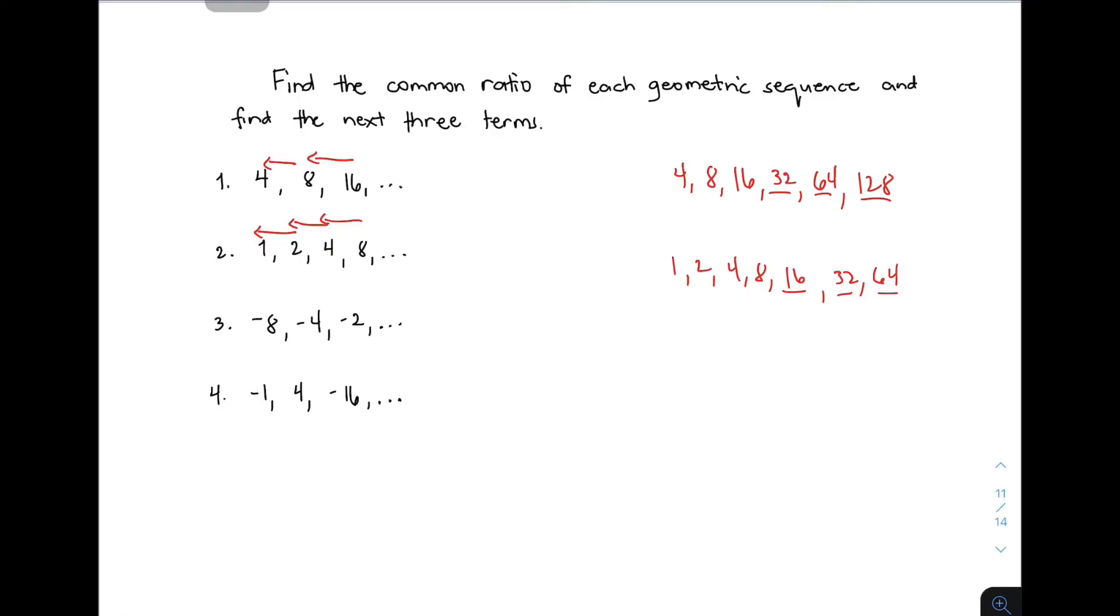For item number 3, we have -8, -4, and -2. Remember, when finding the common ratio, start from the second term divided by the first term. So r = -4 ÷ -8. Since both numbers are negative, the answer is positive. Simplifying 4/8 gives 1/2. Next, -2 ÷ -4 also gives 1/2. The common ratio is 1/2.